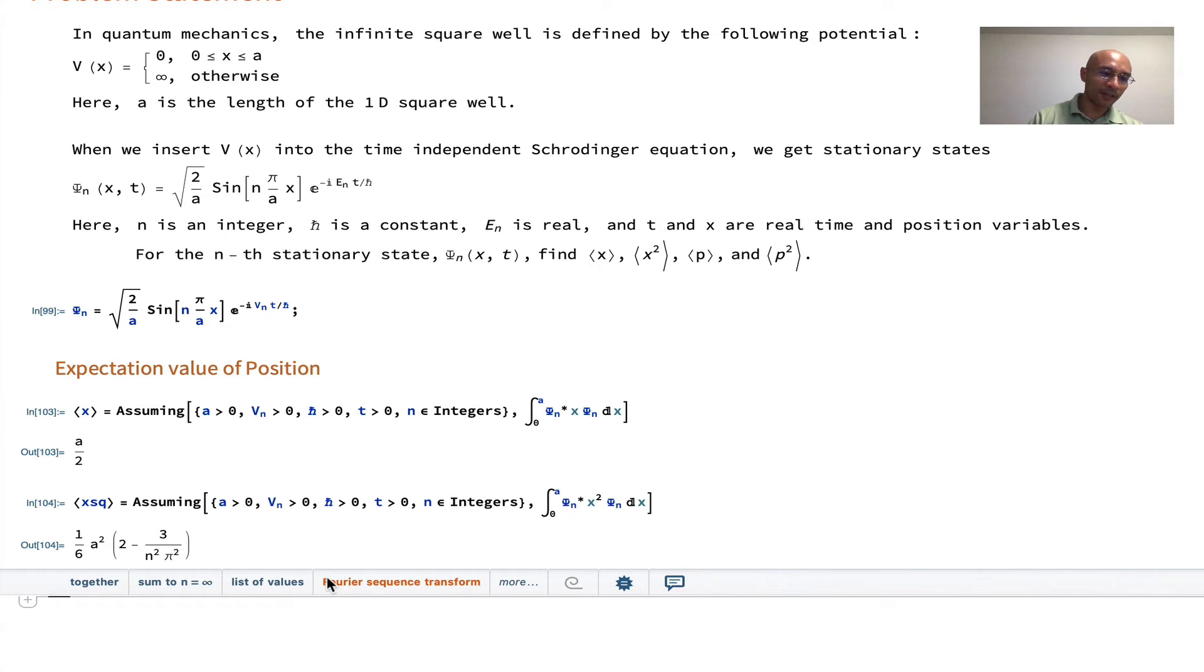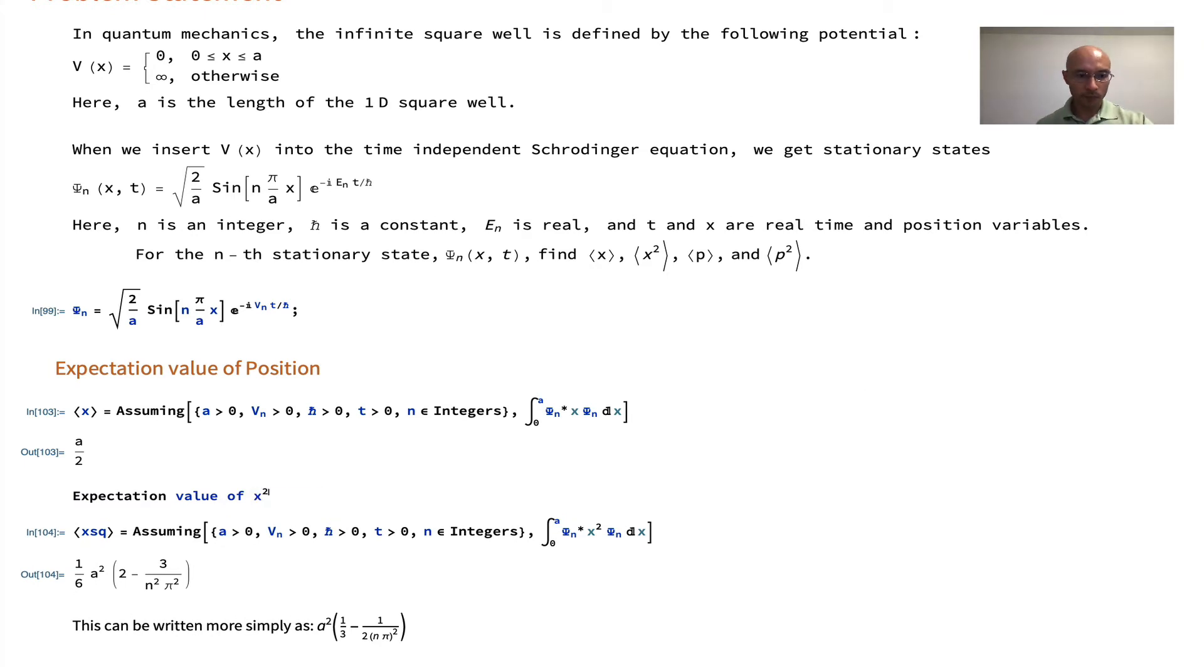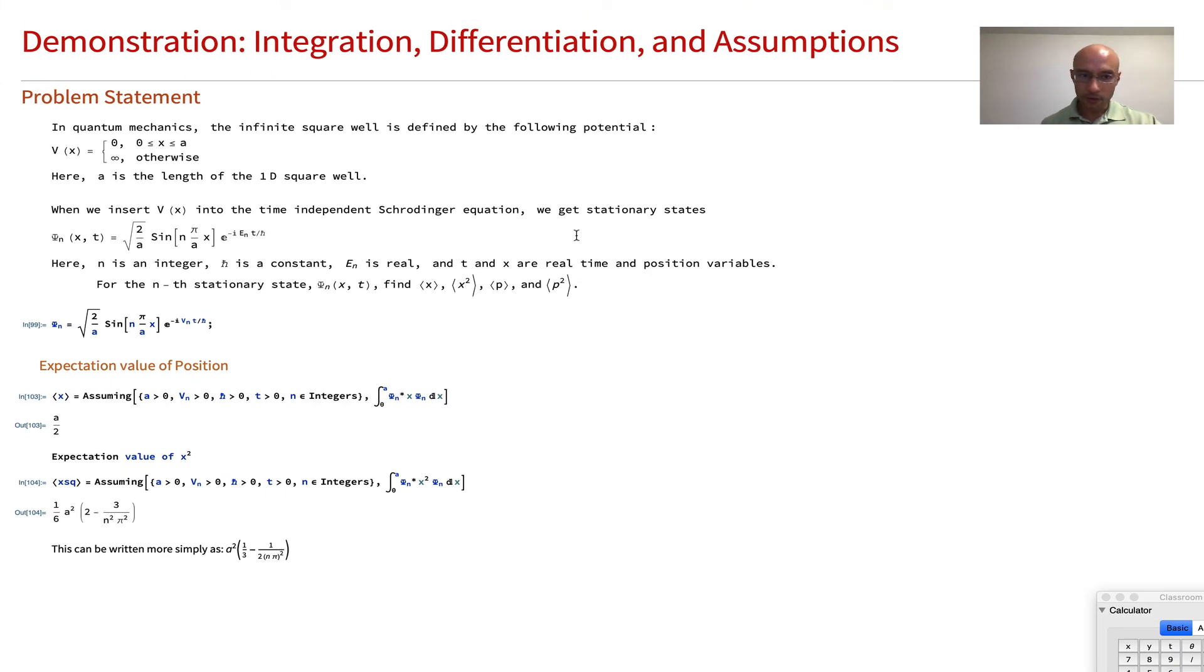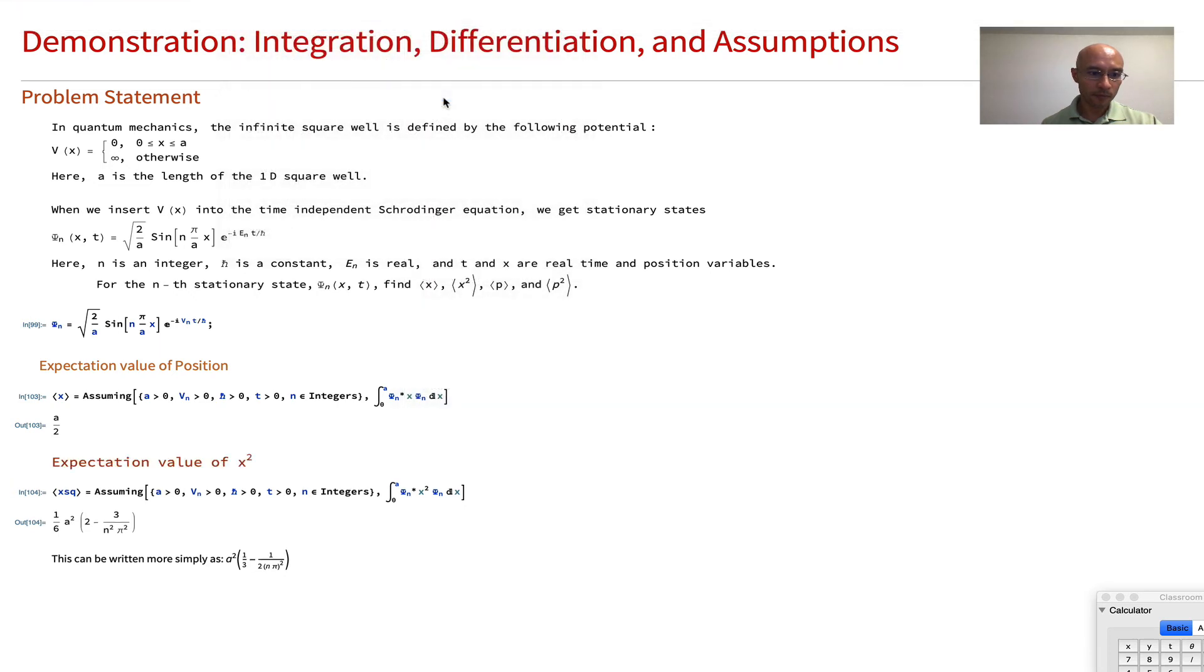Sometimes in Mathematica, you want to annotate things and make things nicer. So I'm just going to annotate this a little bit. I start typing and follow the suggestion to convert it to a text cell. So now I have a nicer expression for this. I'm going to also put this here and turn this cell into a subsection.